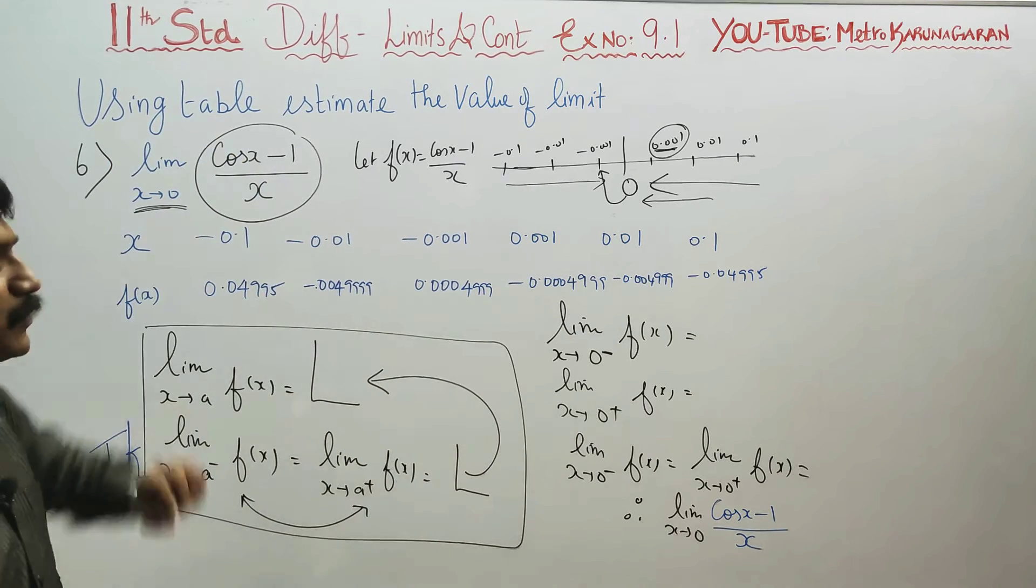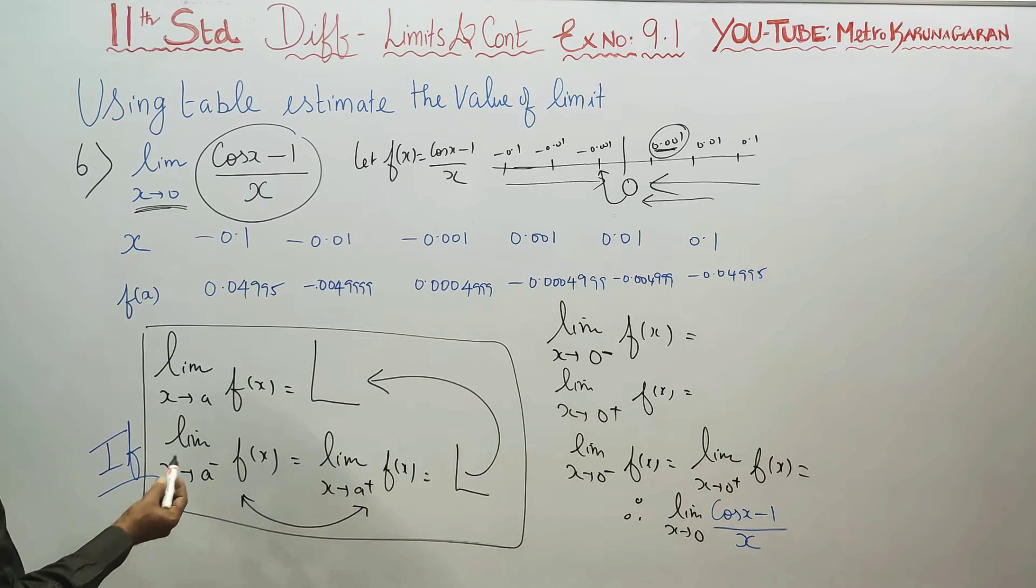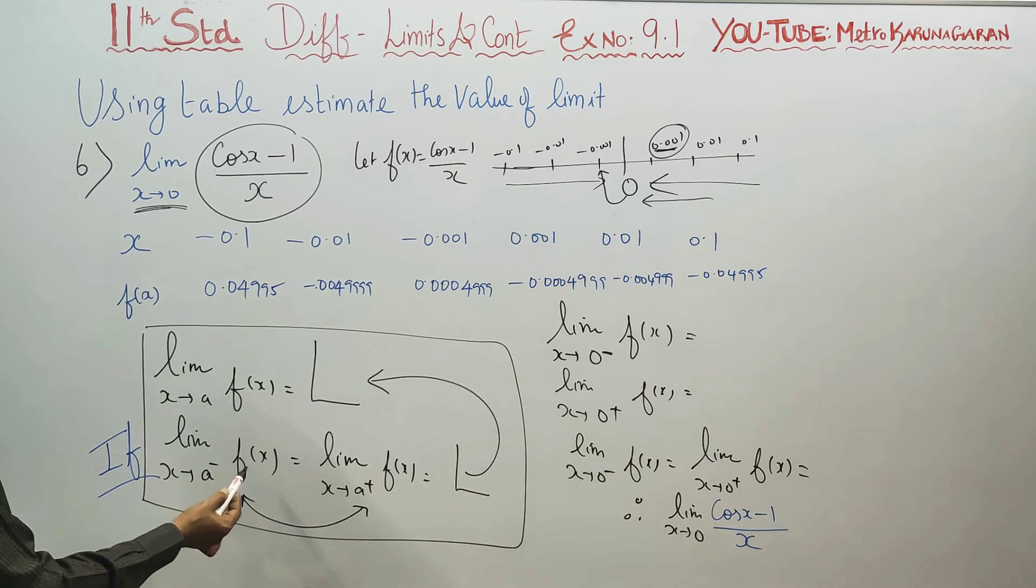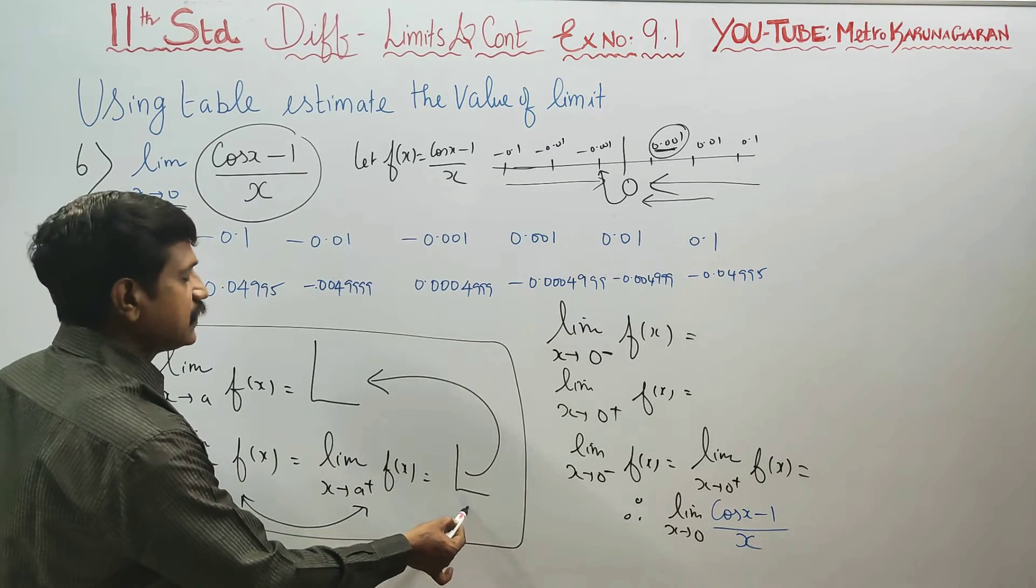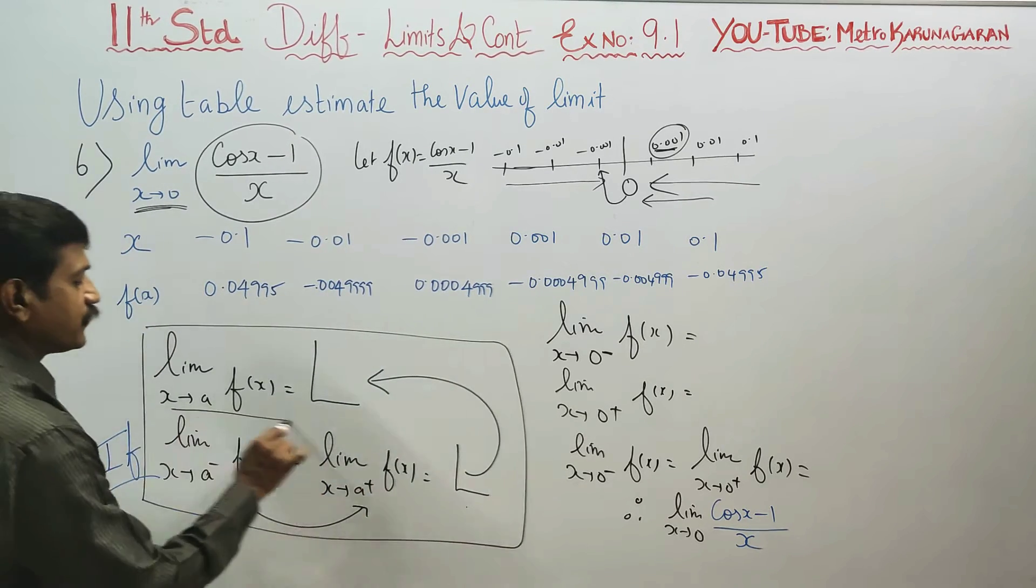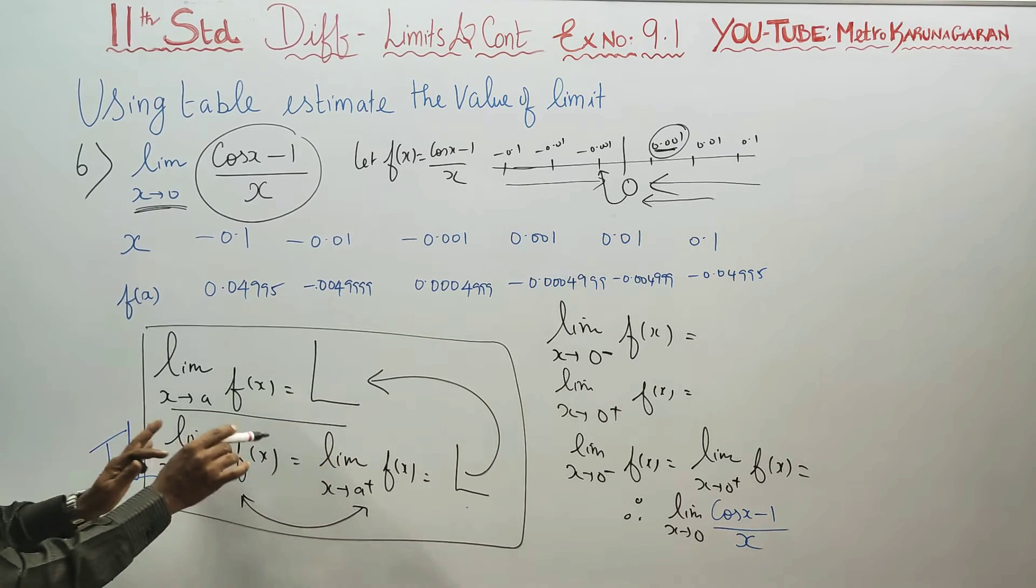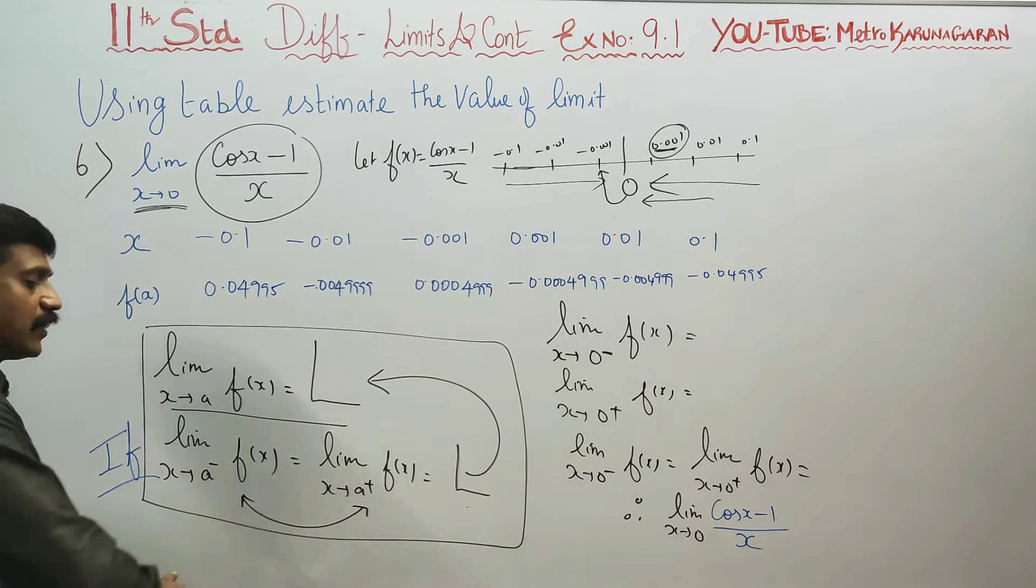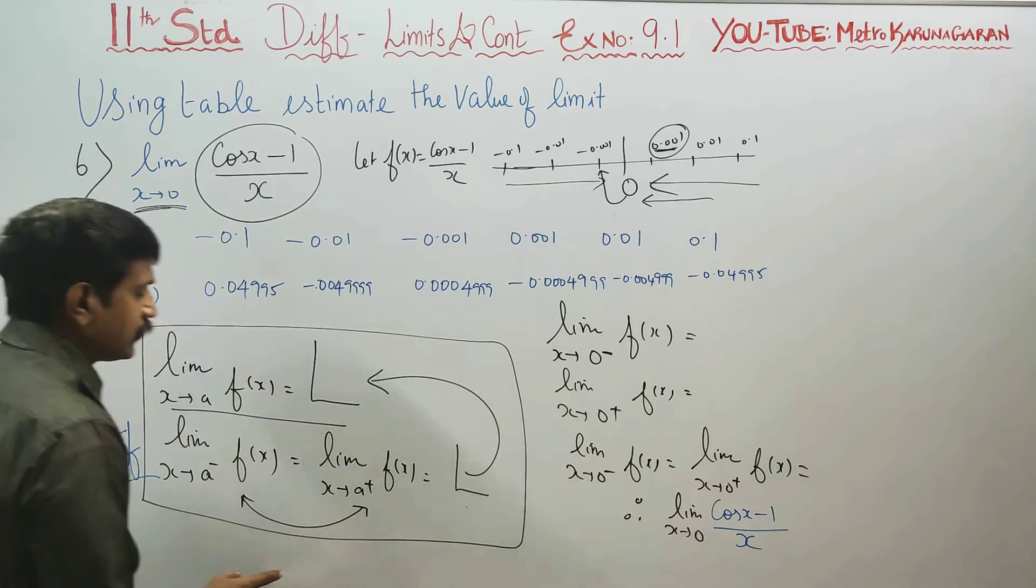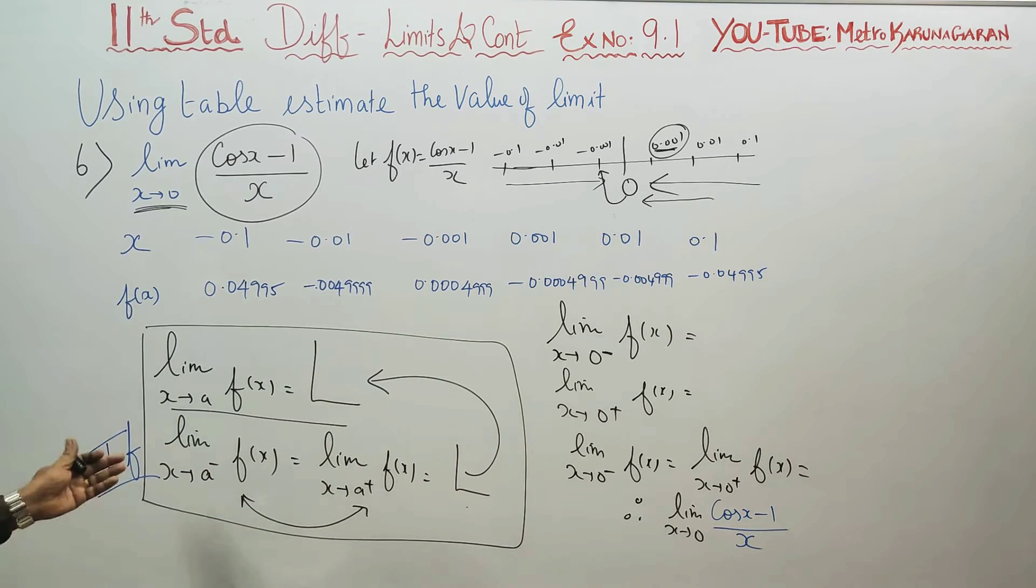For the function, the important formula is: if left-hand side limit of the function and right-hand side limit of the function are equal, then the value of the limit as x tends to a is L. This is the formula or rule. Left-hand side limit equal to right-hand side limit, and the value of limit is L.